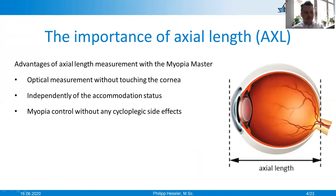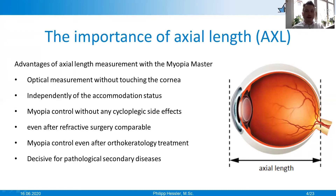The advantages of axial length measurement with the Myopia Master: we have an optical measurement without touching the cornea that is completely independent of accommodation status, so myopia control can be performed without any cycloplegic side effects. After refractive surgery, we no longer know what the status of the eye is, and the same applies after orthokeratology care, which is an important care option in myopia.